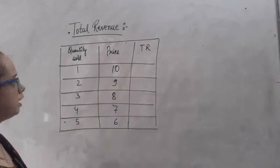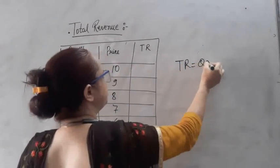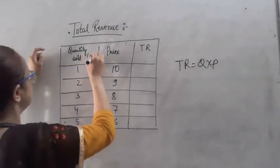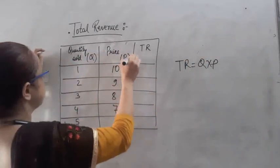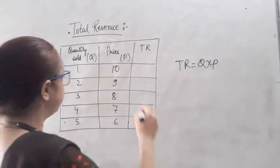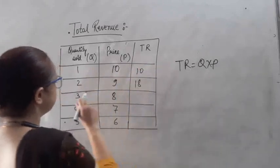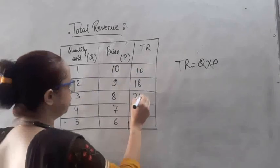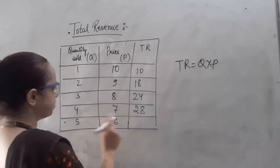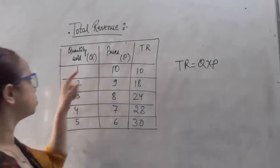Now let us calculate TR. TR equals quantity multiplied by price. So multiplying each quantity by its price: 1×10=10, 2×9=18, 3×8=24, 4×7=28, 5×6=30. These are the total revenue values.